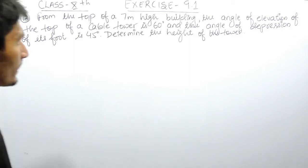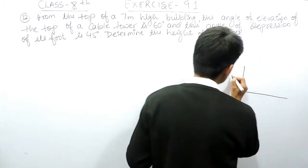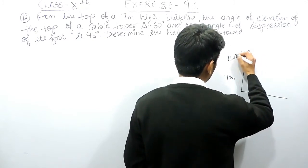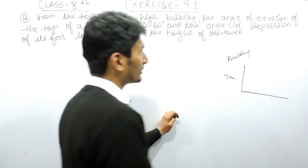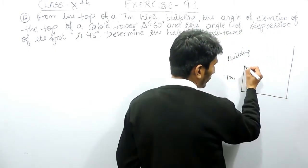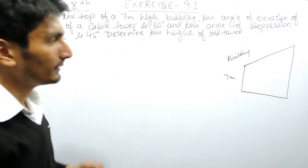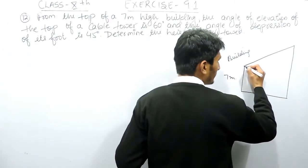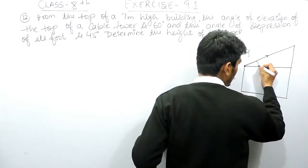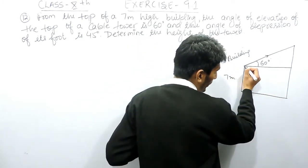You have to determine the height of the tower. In this question it is given that there is a 7-meter high building. From the top of this building, if I see the top and bottom of another tower — the angle of elevation to the top of this tower is my line of sight versus the horizontal distance, which is given as 60 degrees.